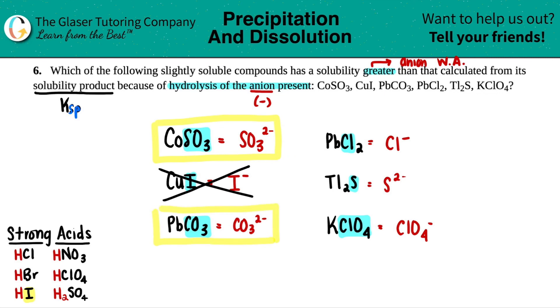Let's do this side now. Cl. Do I see a Cl here? Yes, I do. And remember, strong acids will not make that solubility greater. Tl2S, S2 minus, is that part of our strong acids? I don't see that. So this would be another one.